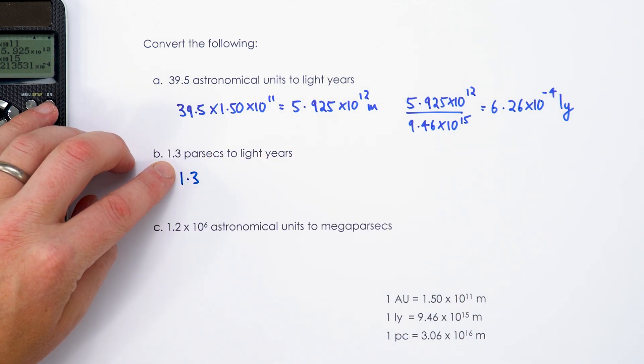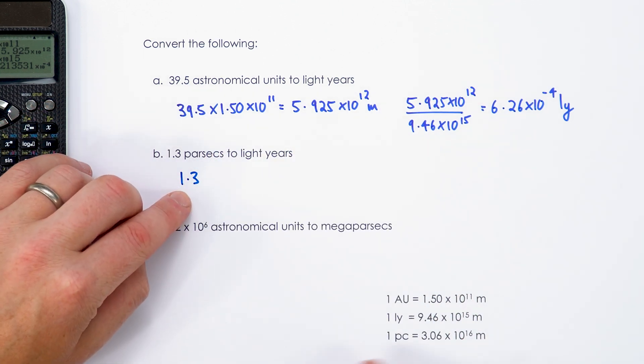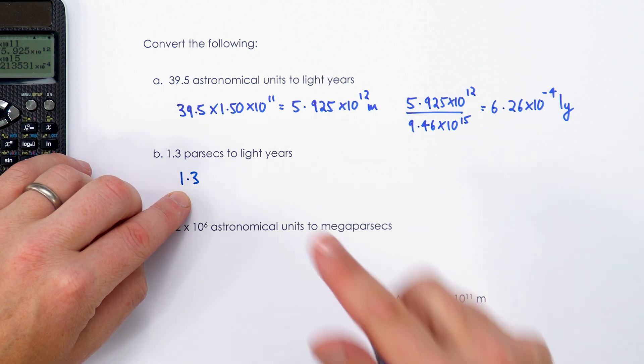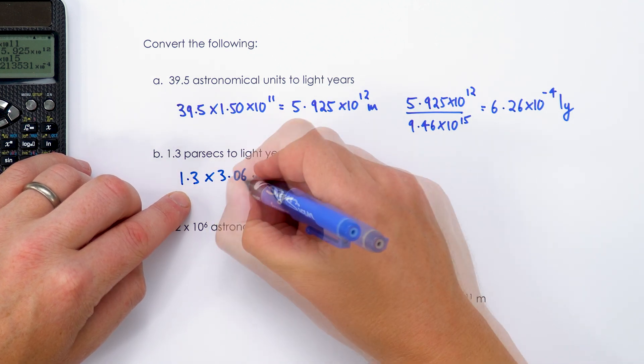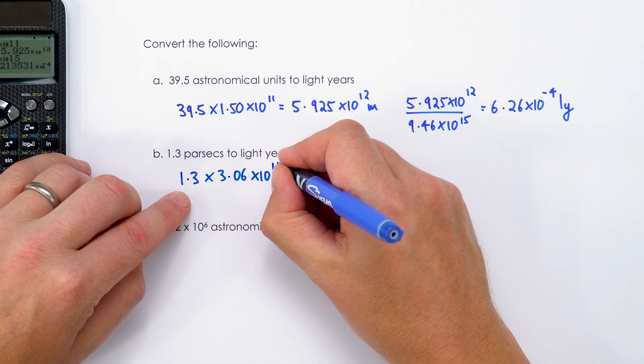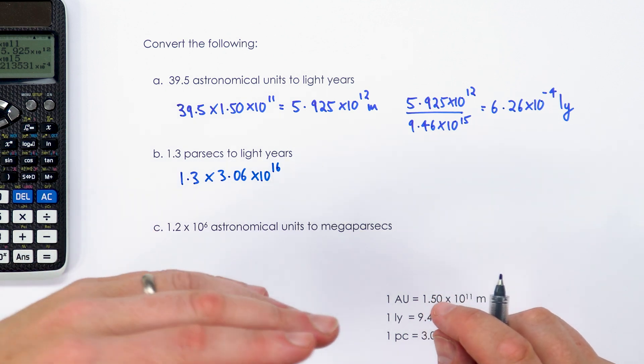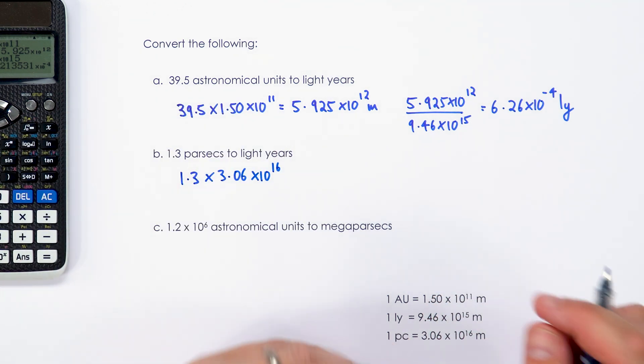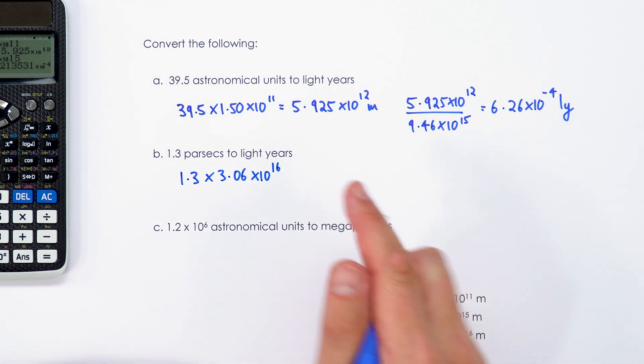That's the same as 1.3 times 3.06 times 10 to the 16 to convert it into metres. And we can go from metres into light-years once again by dividing by the number of metres in a light-year.